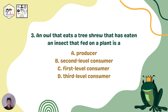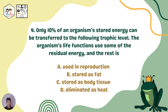Question number three: An owl that eats a tree shrew that has eaten an insect that fed on a plant is what we call a: A. Producer. B. Second-level consumer. C. First-level consumer. Or letter D. Third-level consumer.